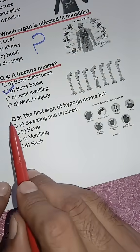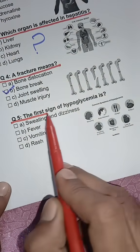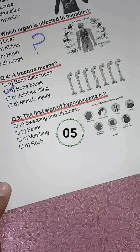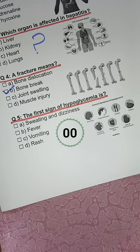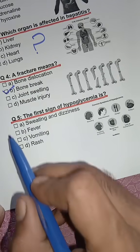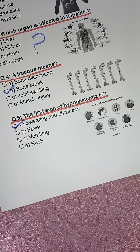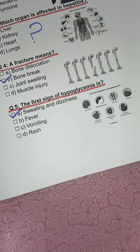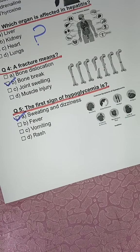Question 5. The first sign of hypoglycemia is? Answer: A. Sweating and dizziness. How many did you get right? Comment your score below and don't forget to follow Quiz Talk for more daily quizzes.